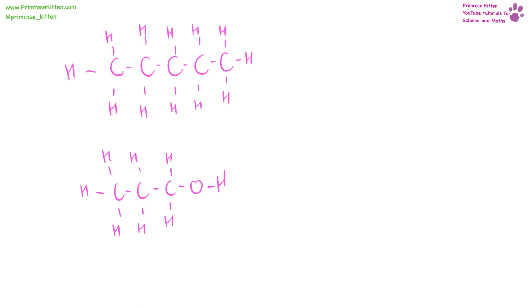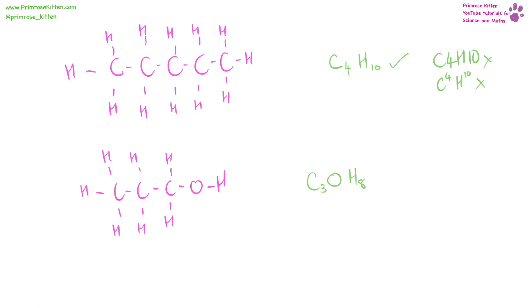If they give you a drawing of a compound and ask you to give the formula, you simply list what elements you have and how many. In the first one, we have four carbons and ten hydrogens. In the second, we have three carbons, one oxygen, and eight hydrogens — for one we don't put a number. It is really important that you put the numbers in the right place: subscript, little and down.